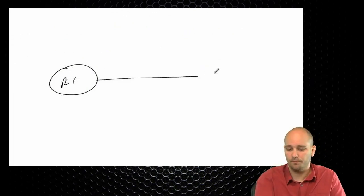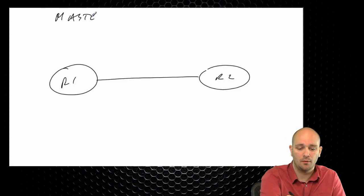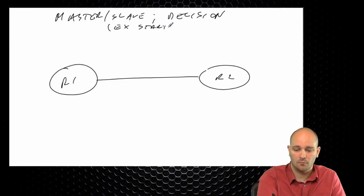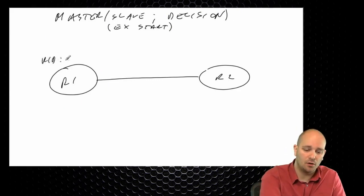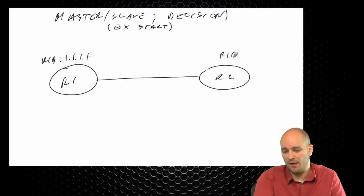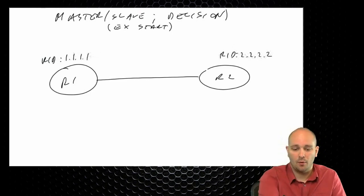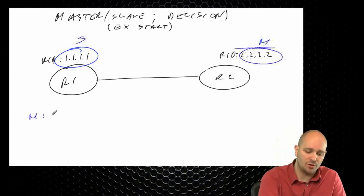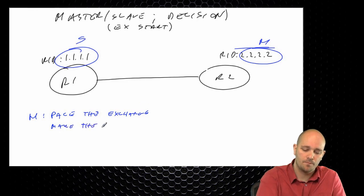Two-way could be an indicator of a problem as well. I'll go through examples of what could cause routers to be stuck in that state for troubleshooting purposes. After the two-way state, there is an exchange start phase. In exchange start, a master-slave relationship is formed and a decision about how to exchange data is made.